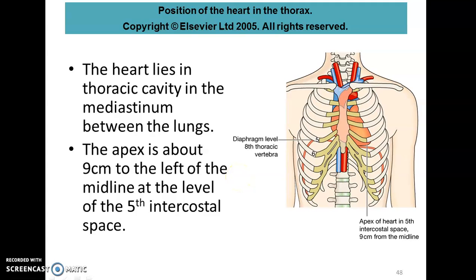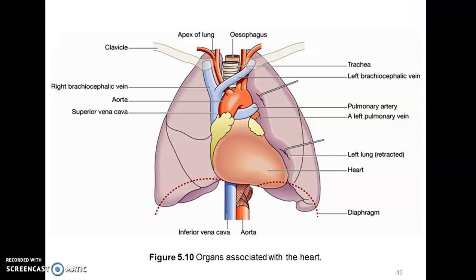The adult heart is about 9 cm wide at the base and 13 cm — roughly 5 inches — from the base to the apex. At any age, it is roughly the size of the same person's fist. A fully grown adult heart normally weighs about 300 grams, or about 10 ounces. This diagram shows the position of the heart located within the mediastinum of the thoracic cavity.